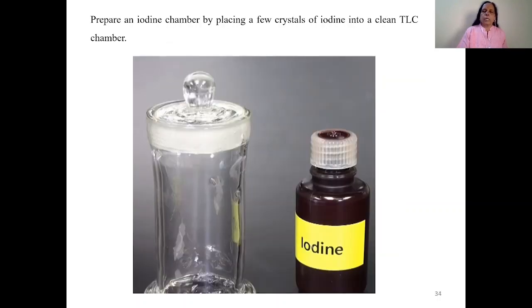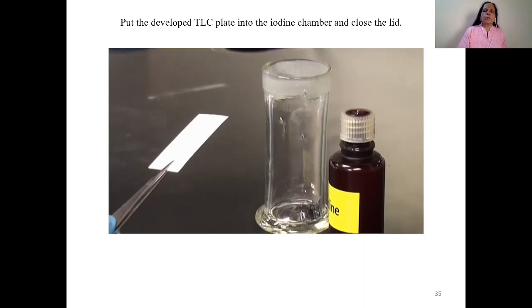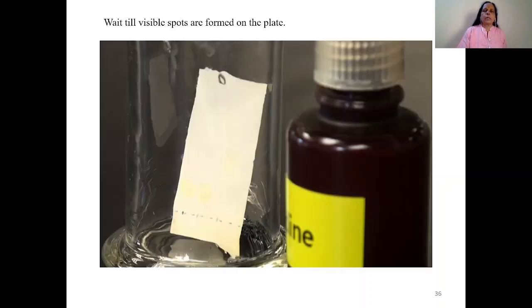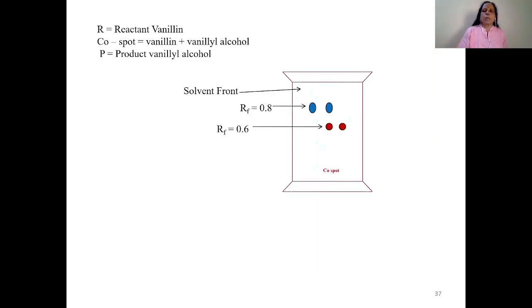Now prepare another chamber, that means you have to prepare iodine chamber to develop these spots. So prepare iodine chamber by adding small amount of iodine crystals into that chamber. Now put that developed TLC plate into iodine chamber and close that lid. Otherwise there will be evaporation of iodine vapors. So close that chamber and wait till you will get visible spots. Now you will get TLC plate like this.